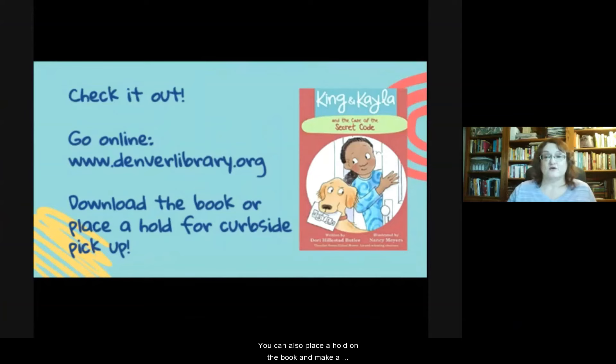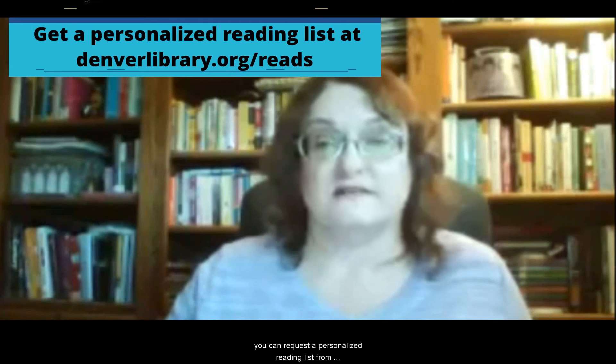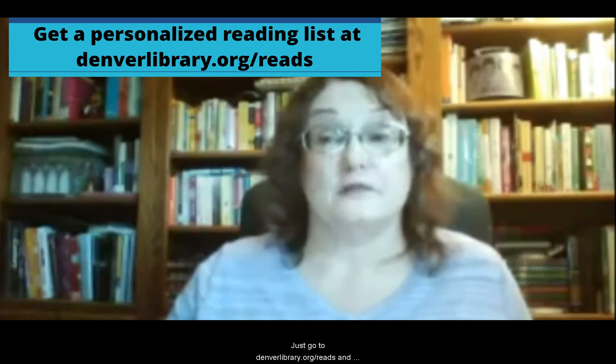If you want to find out how Kayla and King solved the mystery of the secret code, you can check out the e-book from the download section of our website at denverlibrary.org. You can also place a hold on the book and make a reservation for curbside pickup. And if you want to read more books like King and Kayla, you can request a personalized reading list from a librarian who will choose books for you based on what you like to read. Just go to denverlibrary.org forward slash reads and fill out the form.